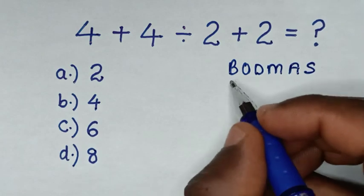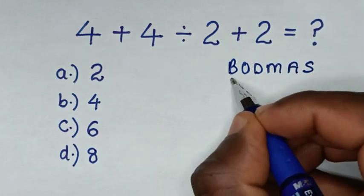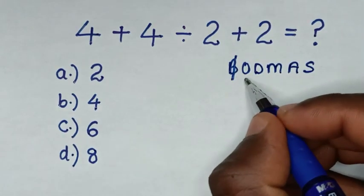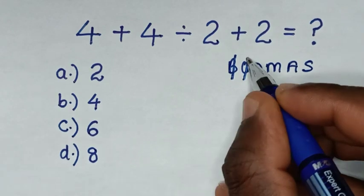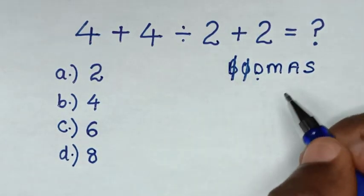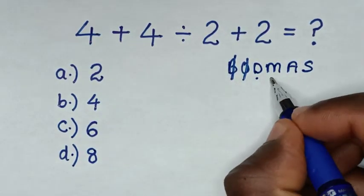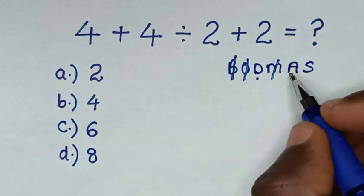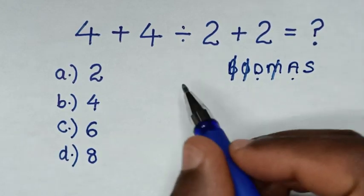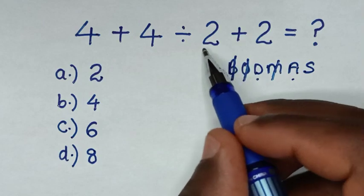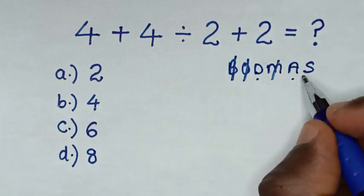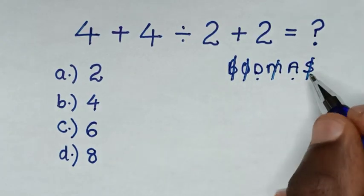B is bracket — in this problem we don't have a bracket. We also don't have order or exponents, but we have division. We don't have multiplication, but we have addition — this first addition and this second addition — and we don't have subtraction.